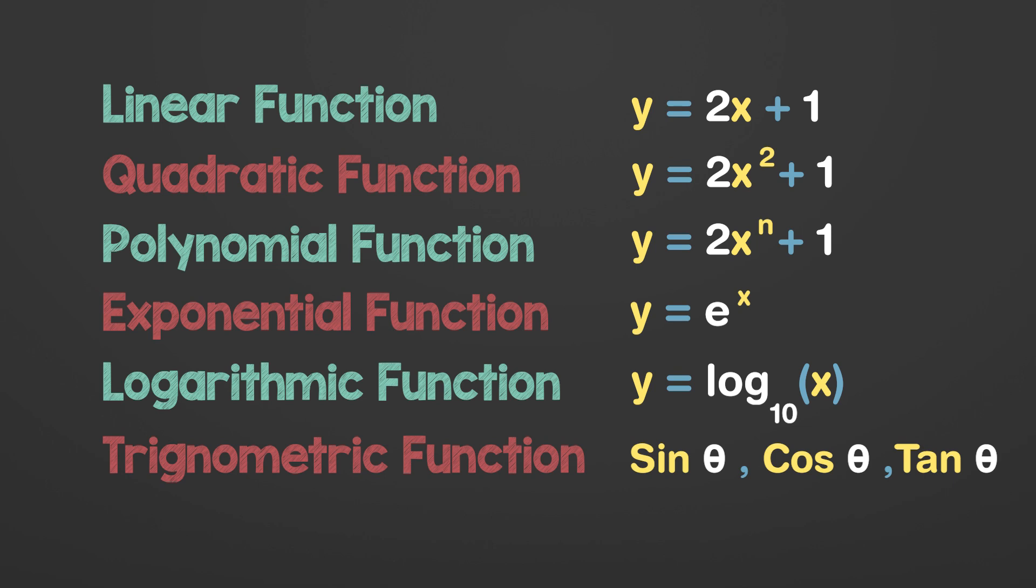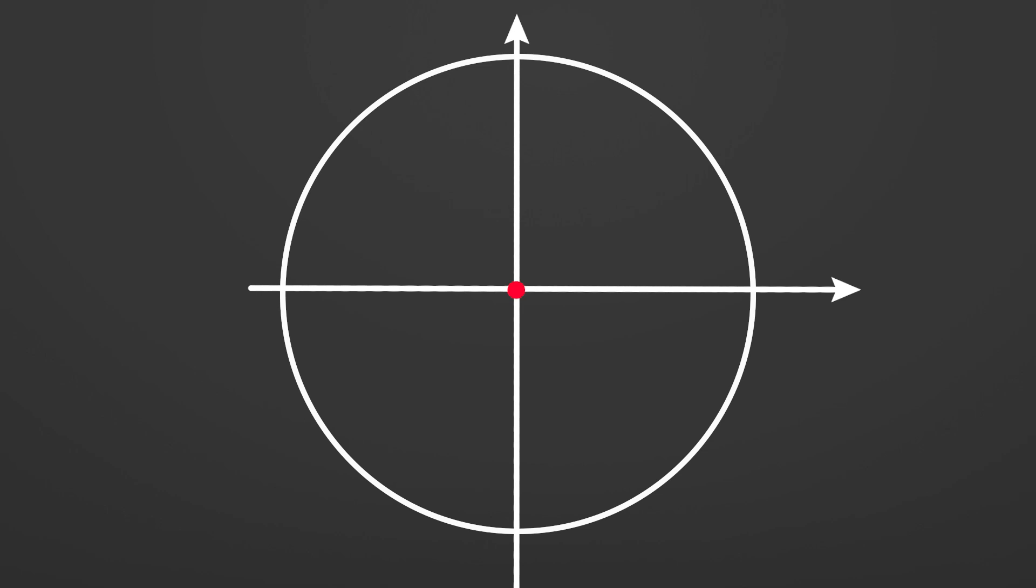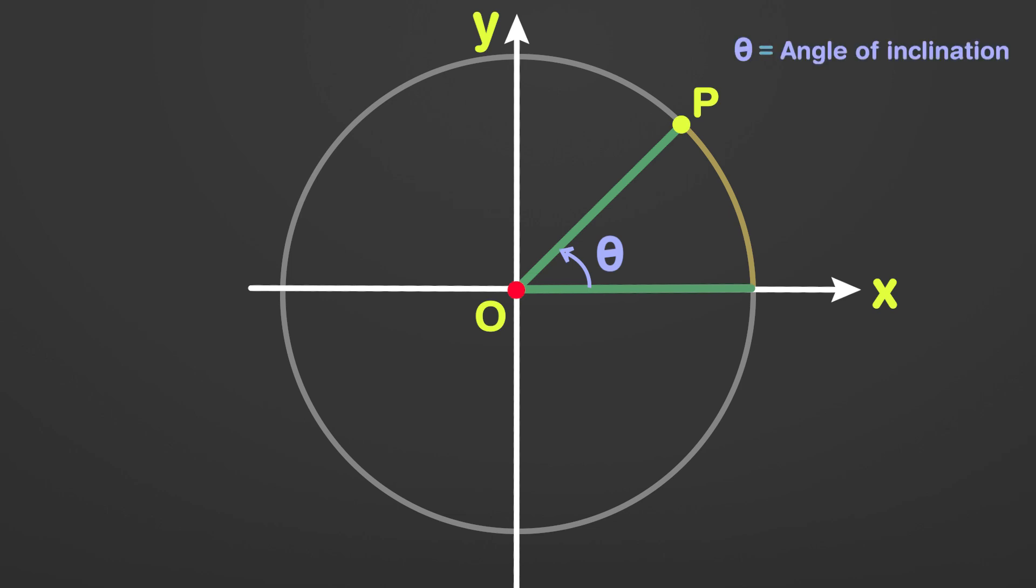To have a closer look at what trigonometric functions are, let's consider a circle of radius 1 unit, with its center as the origin of coordinate plane in x and y axis. We can draw this circle by starting from origin and moving a unit distance to the right along x axis. The line OP is rotated anti-clockwise, and the path traced by point P forms the part of the circle. By default, the angle of OP is measured from x axis in counter-clockwise direction, and it is called angle of inclination.